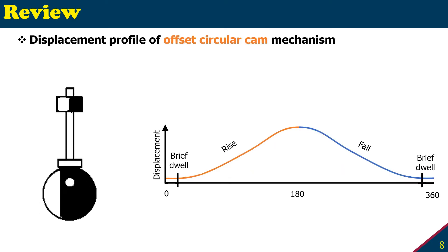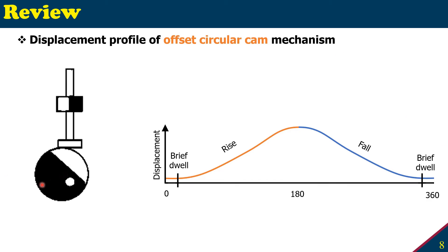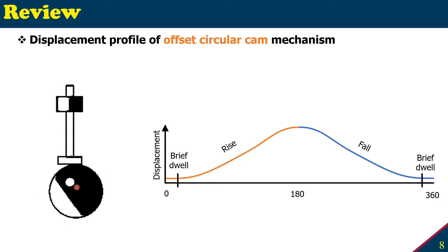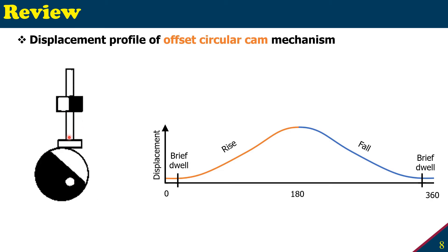The second cam mechanism we're going to study is the offset circular cam. The cam is circular and it is not rotating about the center. It's a little offset, and due to the offset it is pushing it upward and downward.